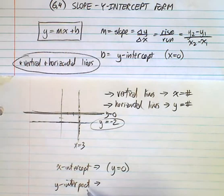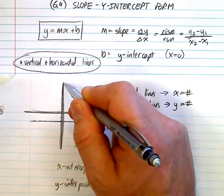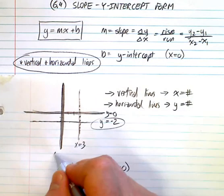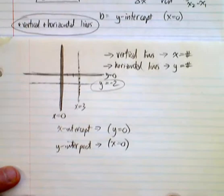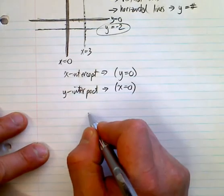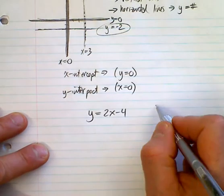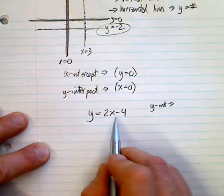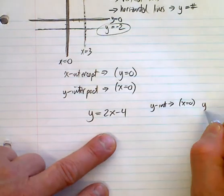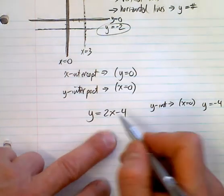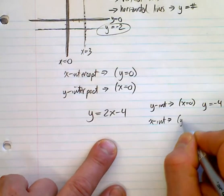If you're looking for the y-intercept, it's where it crosses the y-axis. The y-values change, but what remains constant is that x is equal to 0. So when you want to find the x and y-intercepts of an equation — for example, if you're given y equals 2x minus 4 — if you're looking for the y-intercept, it's where x equals 0. So that term goes away and you get y equals negative 4.